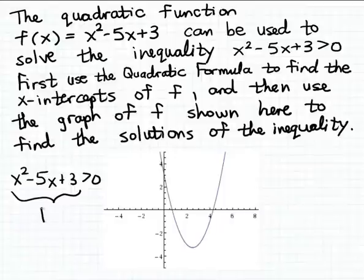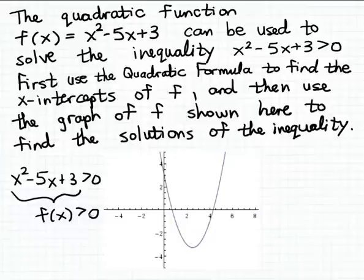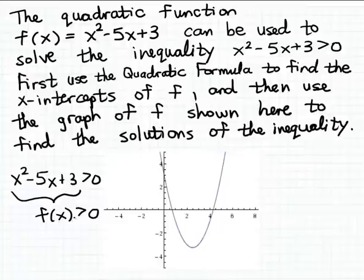I'm going to call that function f. So I'm going to rewrite this inequality as f of x greater than 0. What this tells us is that to solve the original quadratic inequality, we're looking for the inputs x to the function f that will give us a matching output greater than 0. And we're going to use the graph of the function f to determine what those inputs are.